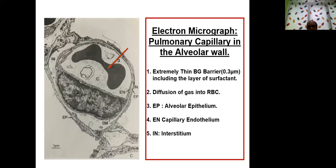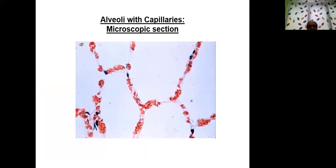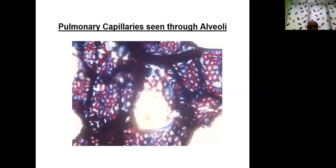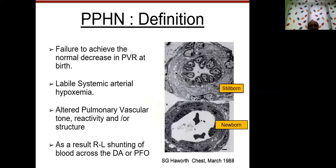What you can see is a pulmonary capillary with a red blood cell, the alveolar epithelium on the other side, capillary endothelium inside, the interstitium, and the surfactant layer. This is where oxygenation happens at the pulmonary capillaries. In pulmonary hypertension, changes are purely hypoxemic due to severe pulmonary vasoconstriction and probably also atelectasis where there is no diffusion of gas.